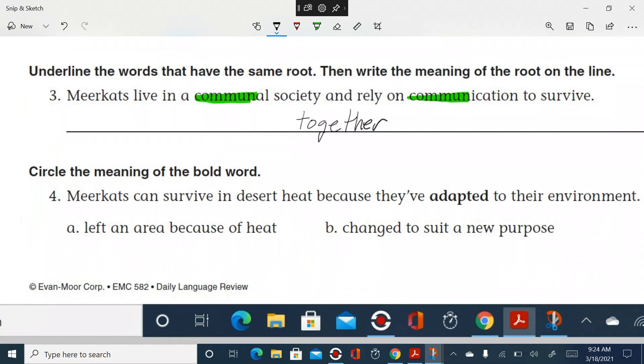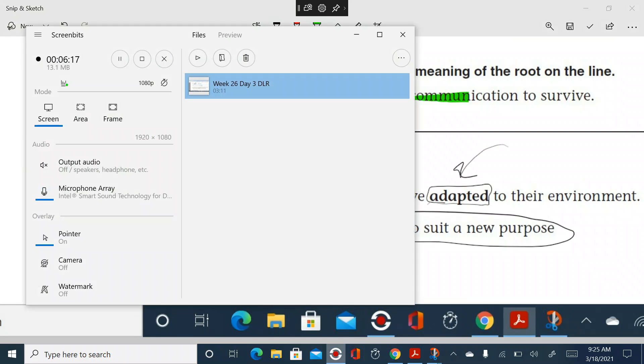All right. Circle the meaning of the bold word. Meerkats can survive in the desert because they've adapted, right, to their environment. Left an area because of the heat or changed to suit a new purpose. Raise your hand if you think it's A. B. There you guys are all in the same spot. Change to suit a new purpose. That's adaptation, right? Very good.